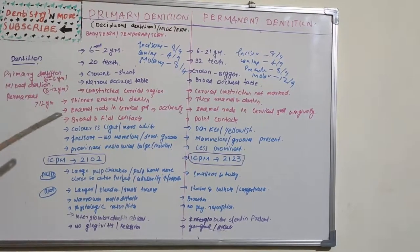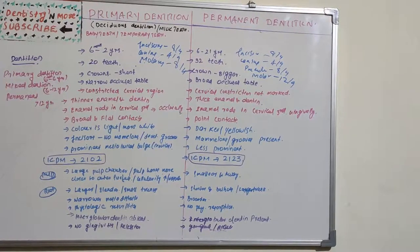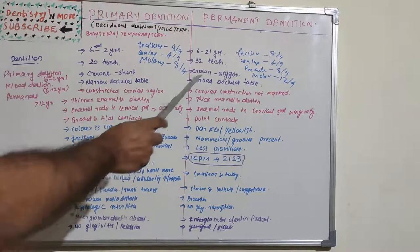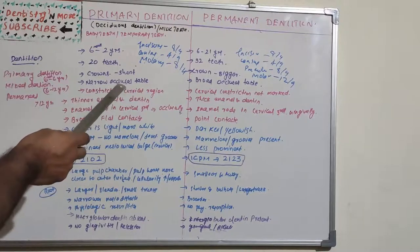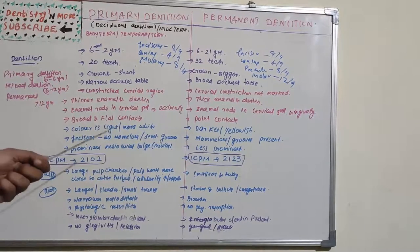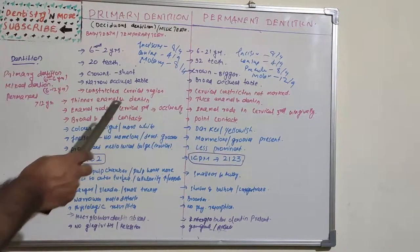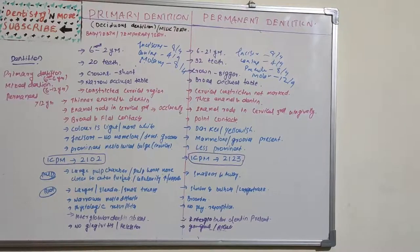Regarding the crowns, in primary dentition the crowns are very short, whereas permanent dentition has bigger crowns. In a child's mouth, small crowns; in an adult's mouth, crowns are bigger. Primary dentition has a narrow occlusal table, whereas permanent dentition has a bigger occlusal table. There is a constriction at the cervical region in primary dentition, which is not very marked in permanent dentition. Primary dentition has thinner enamel and dentine, whereas permanent dentition has thick enamel and thick dentine. The direction of enamel rods at the cervical third is towards the occlusal side in primary dentition, whereas in permanent dentition it is towards the gingival side.